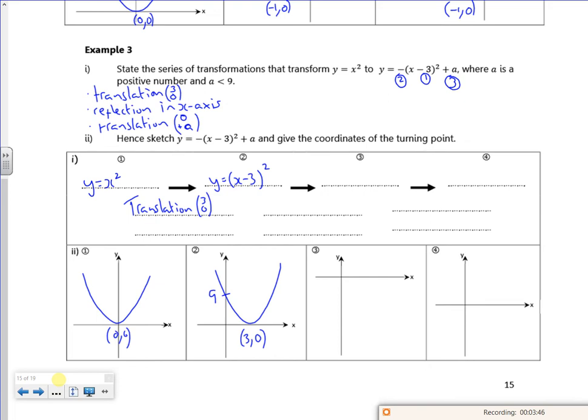What's the next one? Reflection in the x axis. So that's multiplying everything through by minus 1. So minus x minus 3 squared. So I've got my graph upside down now. Still at 3, 0. But my 9 becomes a minus 9.